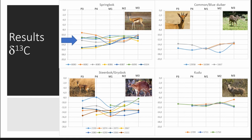The springbok shows fluctuations along the tooth row, probably explained by fluctuations in the amount of C3 food sources available throughout the year — this animal lives in quite a dry area, which is probably why there are rather large variations. The steenbok, which eats both grass and browse, also has a quite large δ13C range, probably because of fluctuations in the amount of C3 and C4 plants it's eating throughout the year as a mixed feeder. For both Raphicerus species, the M1 is consistently lower than the other molars.